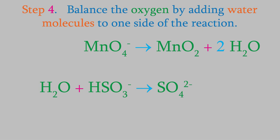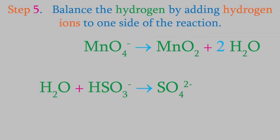In step 5, we balance the hydrogen atoms in each reaction by adding H plus ions to one side. In the reduction, there are 4 hydrogens on the right and none on the left, so we'll add 4 hydrogen plus ions on the left side. In the oxidation reaction, there are 3 hydrogens on the left and none on the right, so we add 3 H plus ions to the right side.